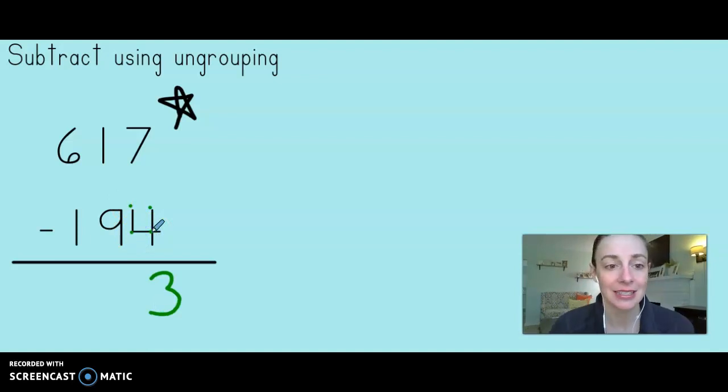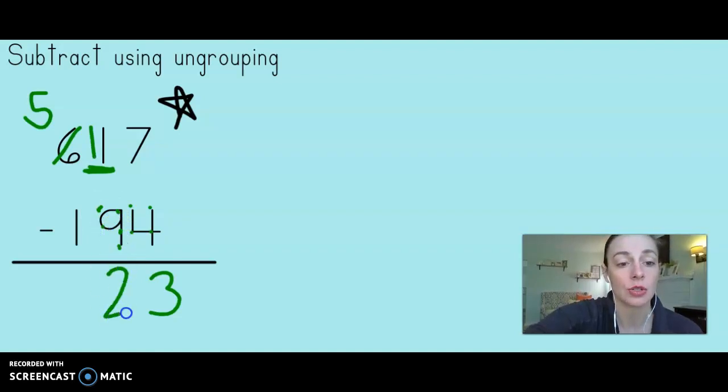Now let's go next door to the tens. One minus nine. If I have one, can I give you nine? No, I can't do that because nine is bigger and it's on the bottom. That means I need to go next door and ungroup. Let's go over to the hundreds place and take one of those hundreds away and ungroup it to the tens. How many tens are in a hundred? Ten tens. That means now instead of just having one ten, I have eleven tens. Let's go ahead and subtract. I got two tens left.